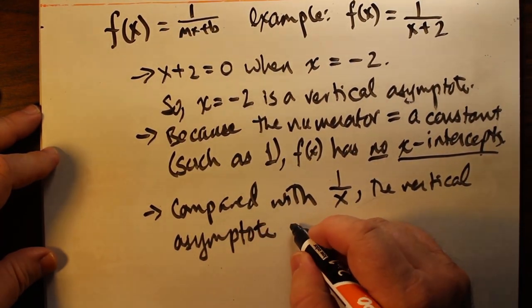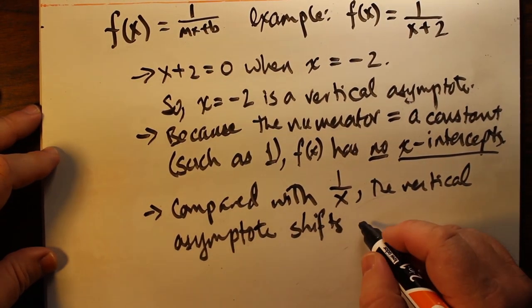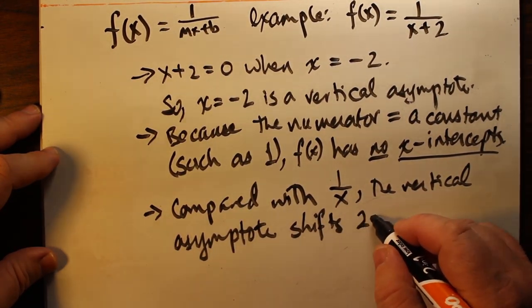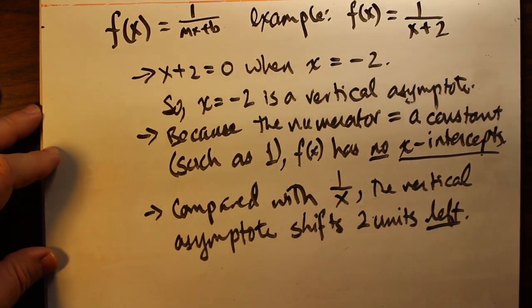If we take one over x as the parent function, the vertical asymptote shifts two units to the left. This is an example of a transformation compared with the parent function.